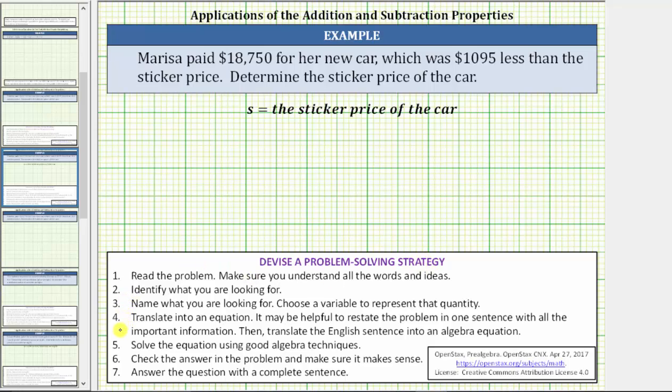The next step is to translate the information into an equation. So because Marissa paid $18,750, we begin our equation with this amount. And because this was $1,095 less than the sticker price, this amount must equal the sticker price minus $1,095. And because we're using the variable S for the sticker price, $18,750 must equal S minus $1,095. So this is the equation from the given information.